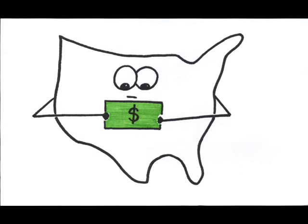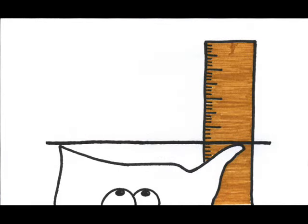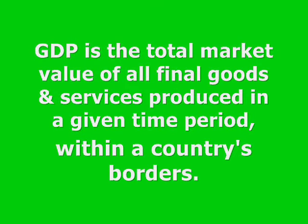But how do we measure it? Well, a country generates income by producing goods and services and selling them. There are actually quite a few ways to look at a country's income, but when it comes to examining a country's growth, we look at its gross domestic product, or GDP. GDP is the total market value of all final goods and services produced in a given time period within a country's borders.